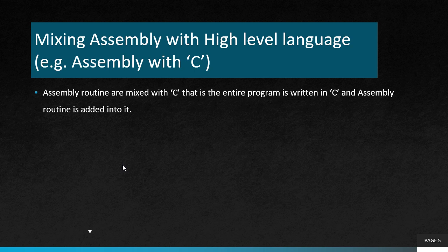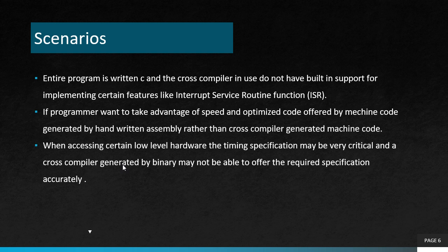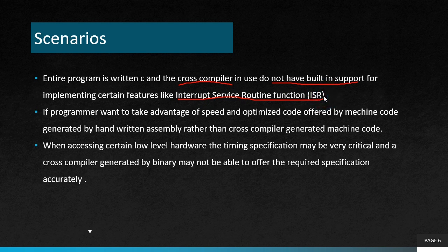Let's talk about the first method: mixing assembly language with high level language. Here we write the entire code in a high level language like C and add a function written in assembly language. We are writing the entire code in C and adding an assembly routine. This allows certain specific advantages to our code. Some scenarios where we have to do this: the cross-compiler we are using may not have all the built-in support, like interrupt service routines. We can use this method to incorporate that built-in support.